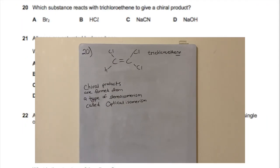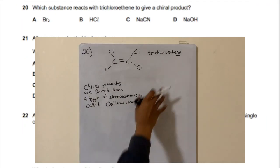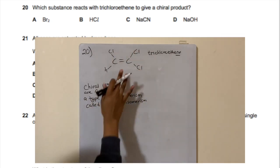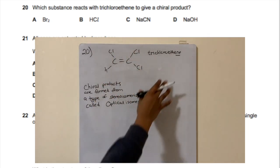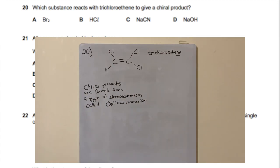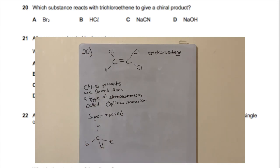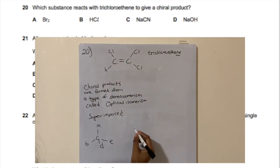For question 20, trichloroethene is an alkene with a double bond and three chlorines. We need to find which substance reacts with it to give a chiral product exhibiting optical isomerism — where the products are non-superimposable mirror images. That requires a carbon attached to four different groups.